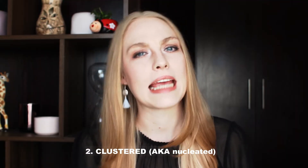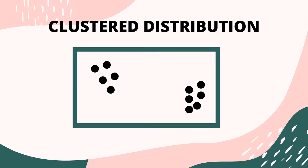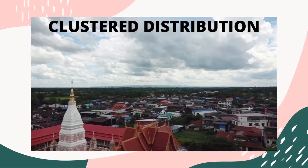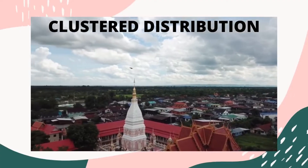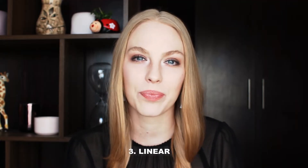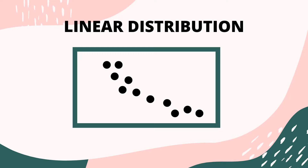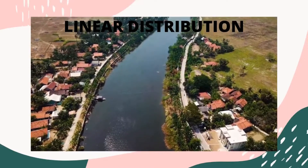The next type of population distribution is clustered, also known as nucleated. With clustered population distribution, houses and buildings are built fairly close together and are often built around a central point such as a church. Any new towns that are planned and developed nowadays tend to be built in this clustered fashion. A third and final type is called linear, which happens when houses or buildings are built along a certain feature such as a shoreline, a river, or even a road.